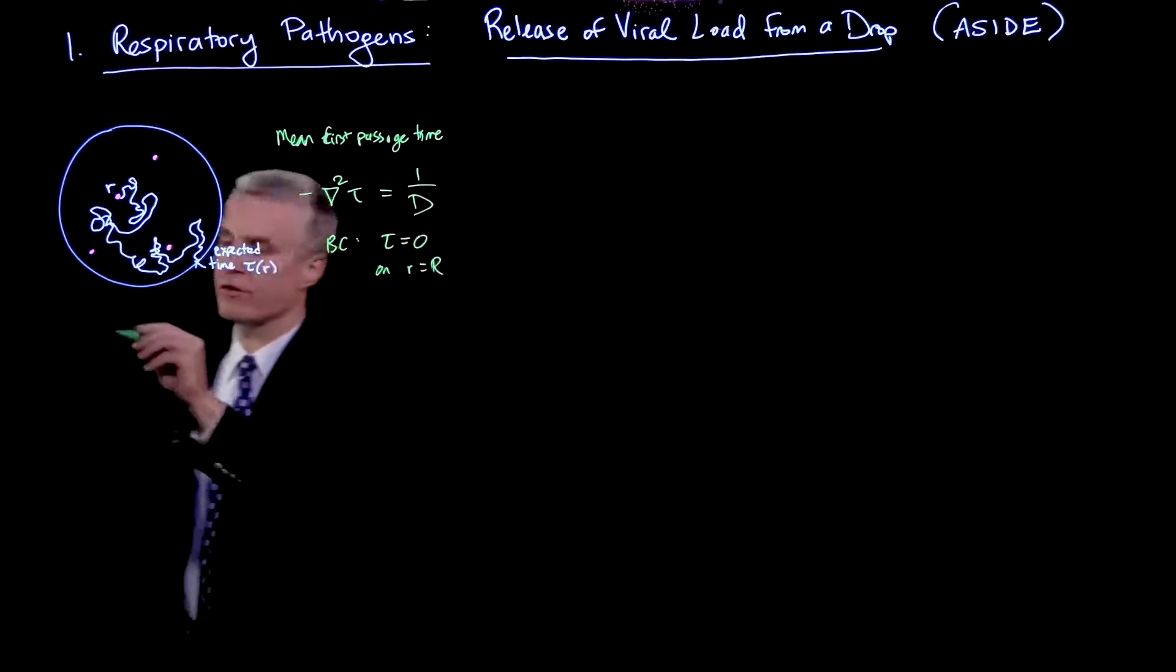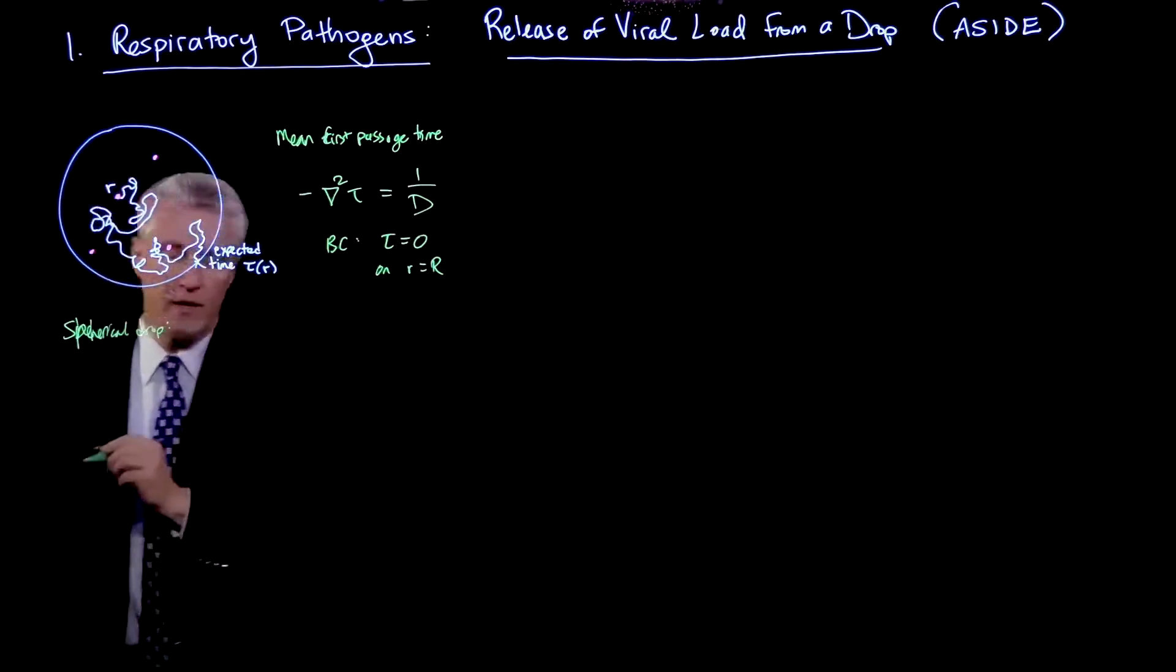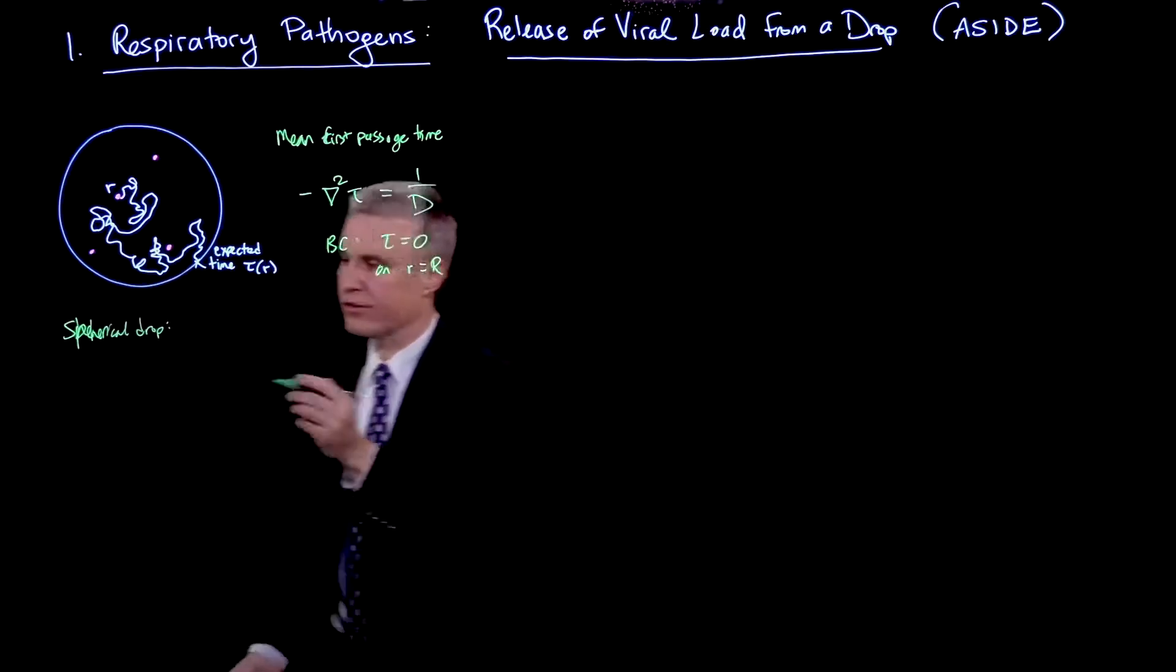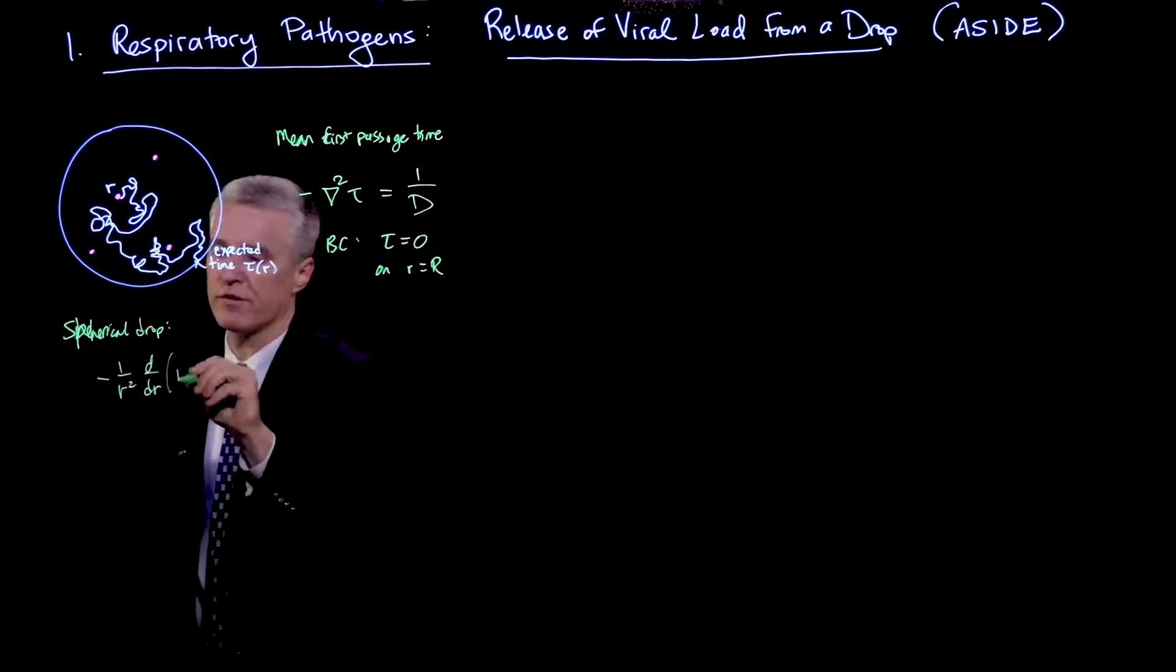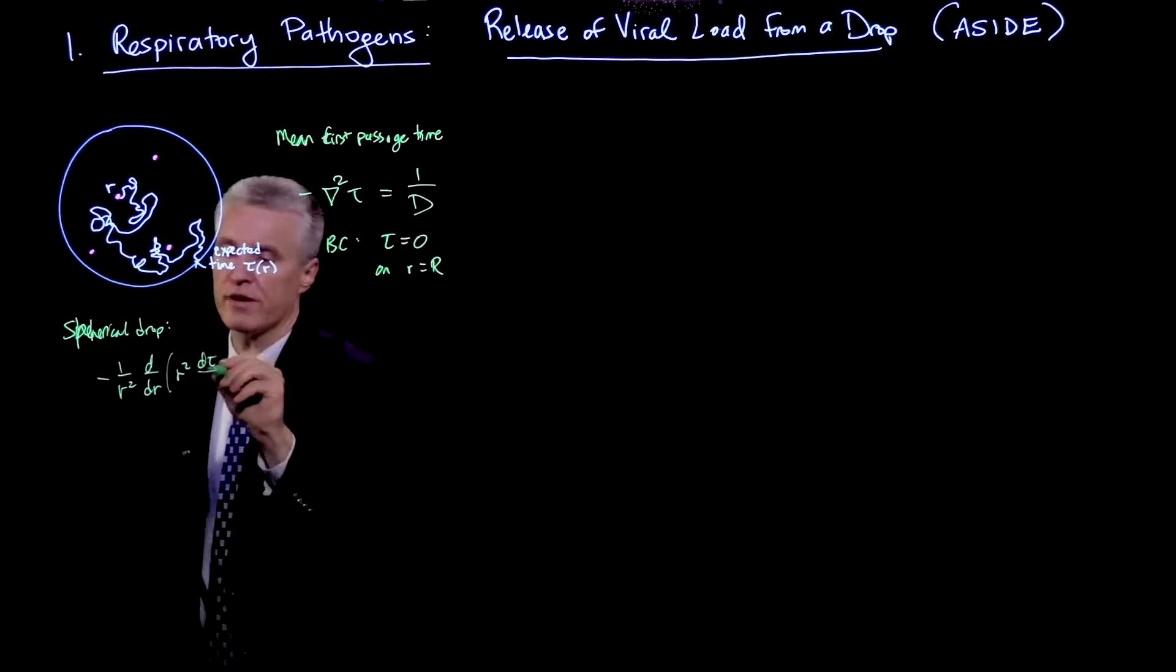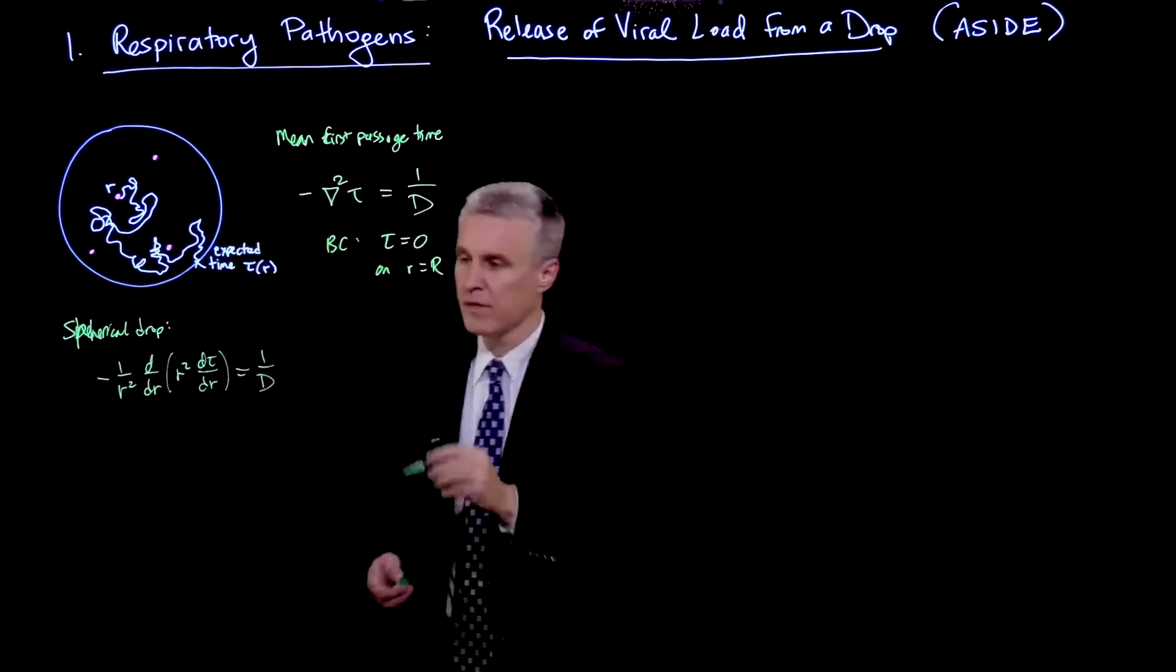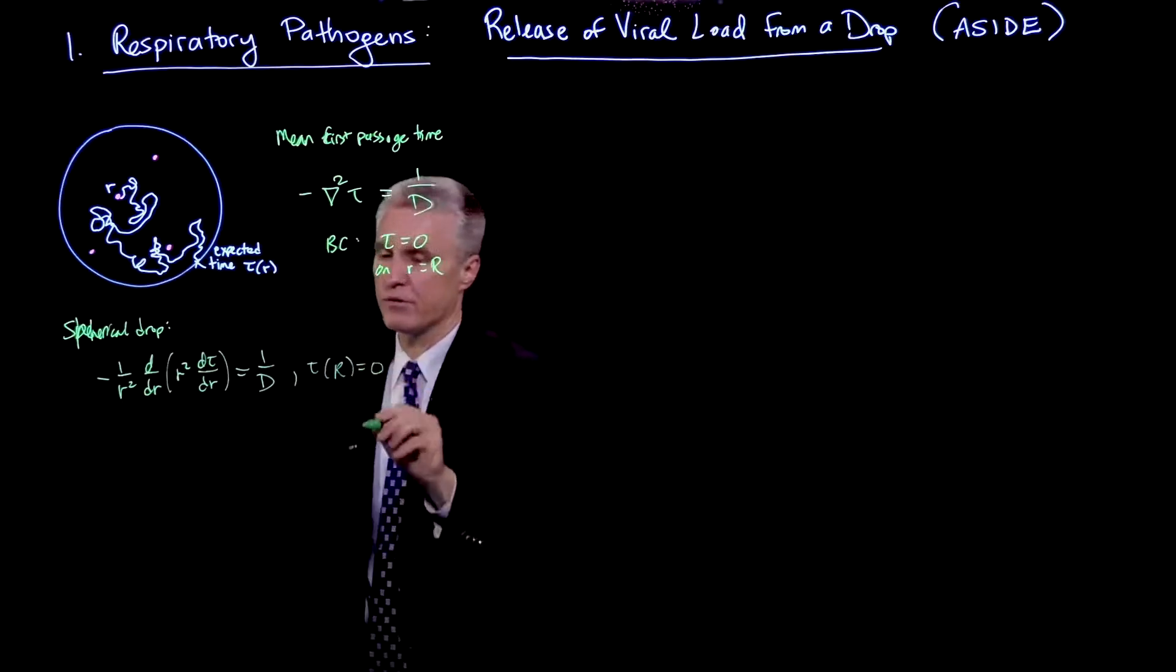So in the case of a spherical drop, then we can write this equation in spherical coordinates. So that's minus 1 over r squared, r derivative of r squared, d tau dr. And that's equal to 1 over capital D. And then again, our boundary condition is that tau of capital R is equal to 0.